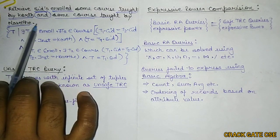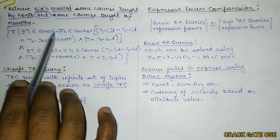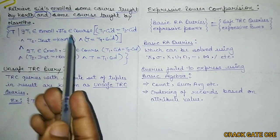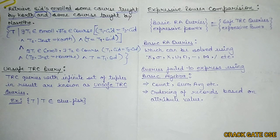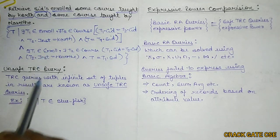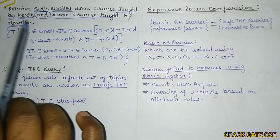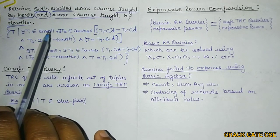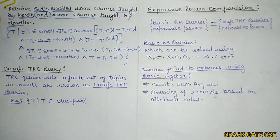This complete query will describe only those student IDs who enrolled in both — a course taught by Korth and a course taught by Navate. The instructor may be different, but the query is checking for only those students who enrolled for both courses. The two sub-queries are combined using AND, so it retrieves students enrolled in a course taught by Korth and also enrolled in a course taught by Navate.